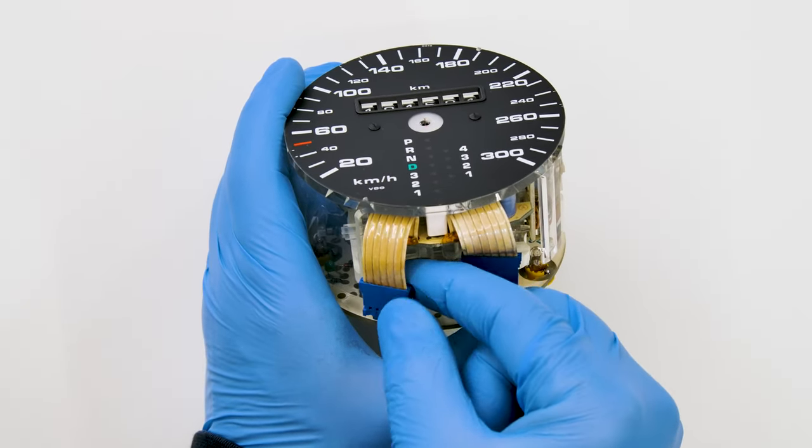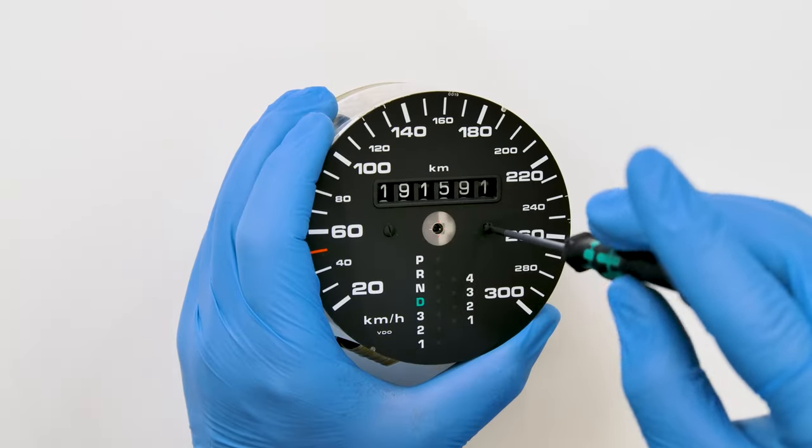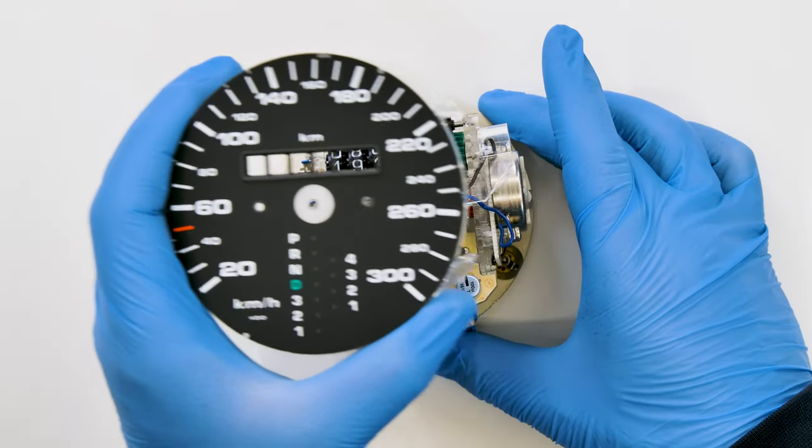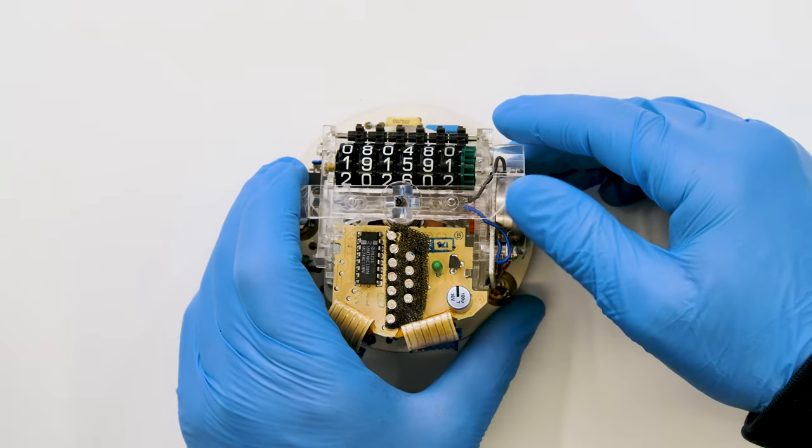Disconnect the two FFCs and with a flathead screwdriver, loosen the two screws on the gauge face. Remove the overlay, then the clear plastic.